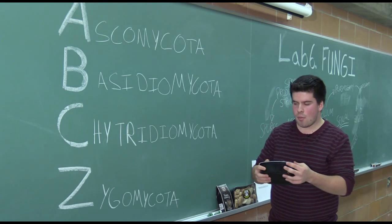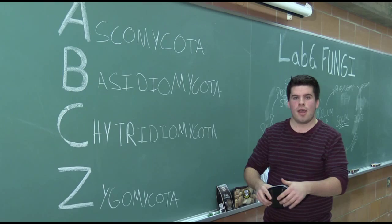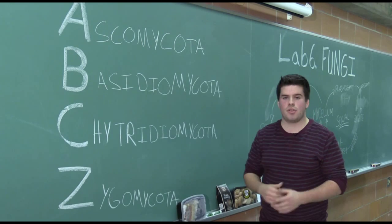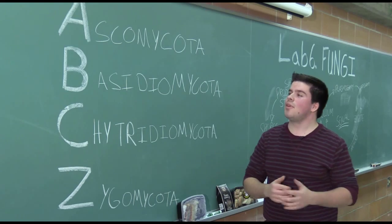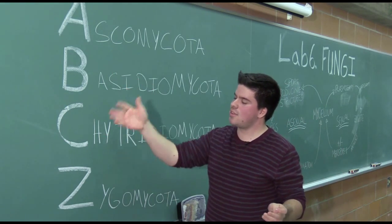A simple way of remembering all four phyla is remembering how you learned the alphabet. A, B, C, D, E, F, G. But instead, this time, it's A, B, C, Z.